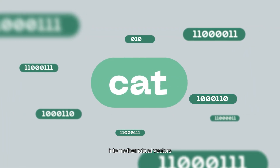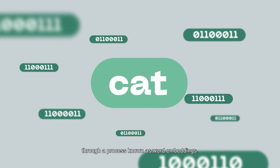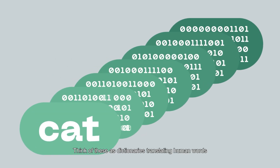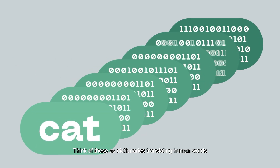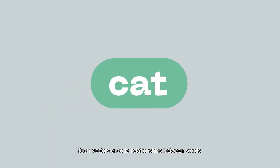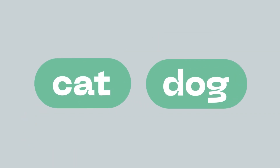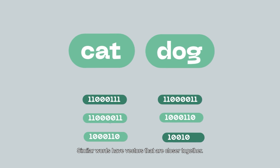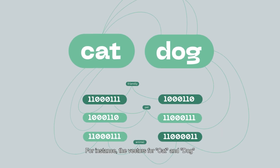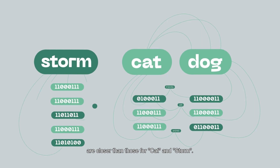Converting human language into mathematical vectors through a process known as word embeddings — think of these as dictionaries translating human words into mathematical representations. Such vectors encode relationships between words; similar words have vectors that are closer together. For instance, the vectors for cat and dog are closer than those for cat and storm.